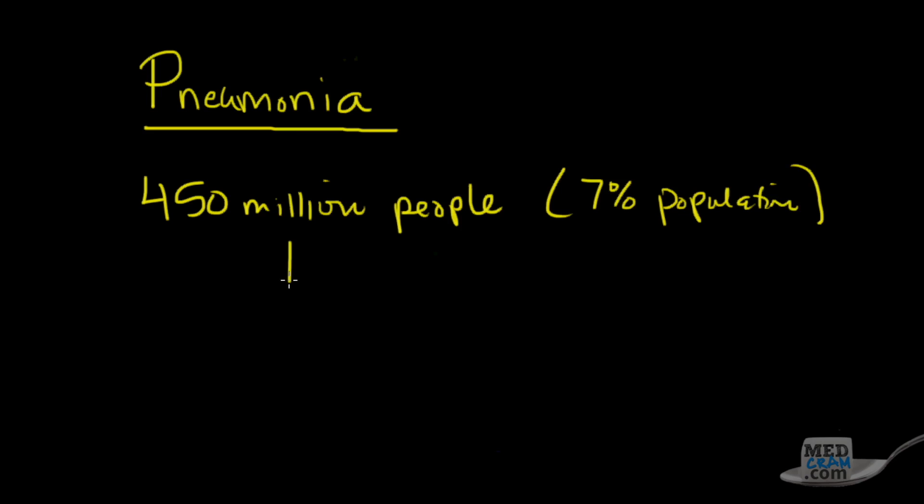Out of those 450 million people who develop pneumonia, there's about 4 million deaths. We do treat these things with antibiotics and vaccines. Today we're going to talk about the diagnosis, symptoms, signs, and how we treat pneumonia, and some key things that may come up on tests.